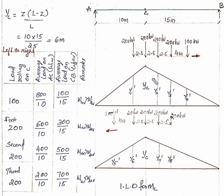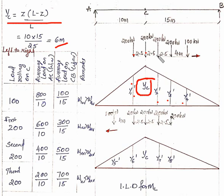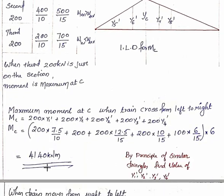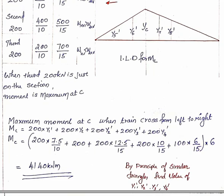We calculate the y-c value: y-c = Z divided by L. We then calculate y1, y2, y3, y4 ordinate values using similar triangles. The maximum moment is: 200×y1' + 200×yc + 200×y2' + 200×y3' + 200×y4'. The maximum bending moment when load moves from left to right is 4140 kN·m.